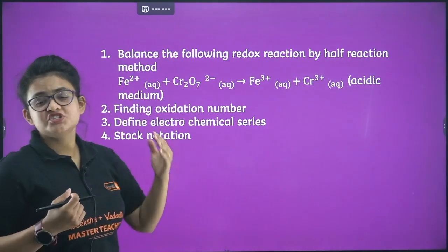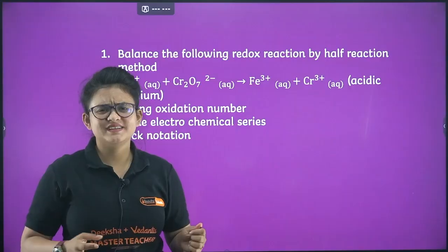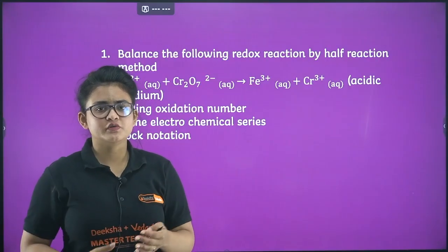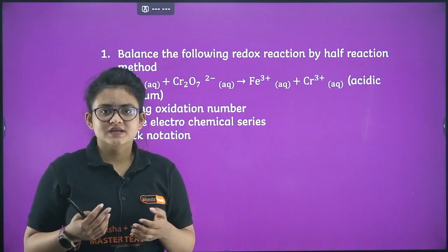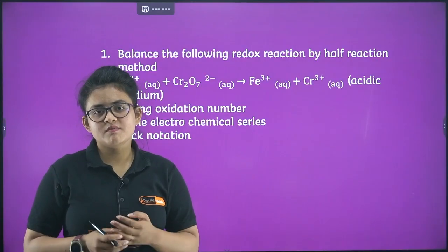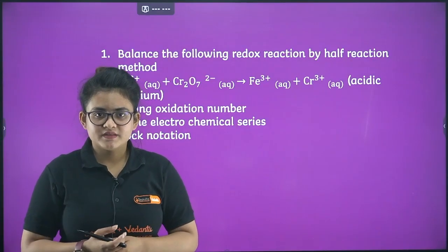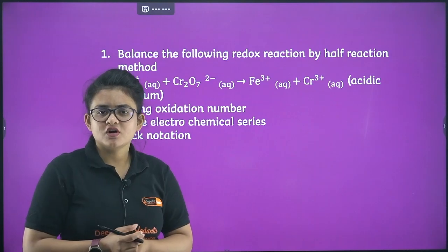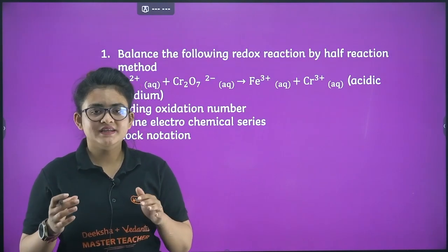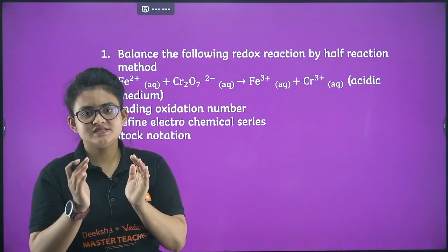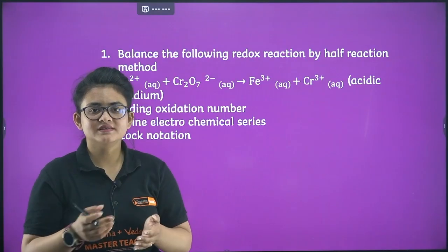And you can see the oxidation number calculation of anything like CrO5, K2Cr2O7, MnO4. This type of compound you can expect and you have to find out the oxidation number of the marked element, right? And stock notation. Stock notation is nothing but finding the oxidation state of the metal and then you are writing that oxidation state within a bracket just beside the metal.